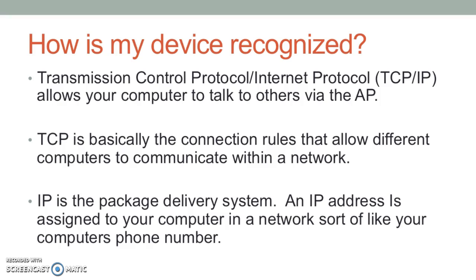One more question you might be asking is: how does the router know which node is which? Your computers use something called Transmission Control Protocol / Internet Protocol for this. TCP follows rules to create and assemble packets of information, and IP sends and receives them. An IP address is assigned to your computer while it's in a network — it's like your computer's very own phone number.